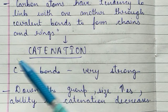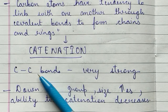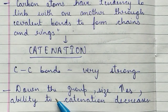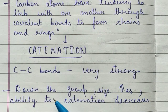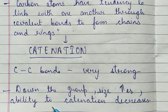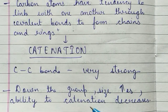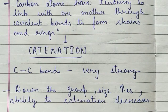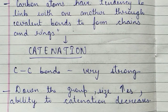Catenation is also seen in other family members, but as we go down the group, atomic size increases and effective overlapping decreases, so the tendency and ability for catenation decreases considerably. Carbon shows catenation at its best — so the catenation property is most prominent in carbon. That's all for today.